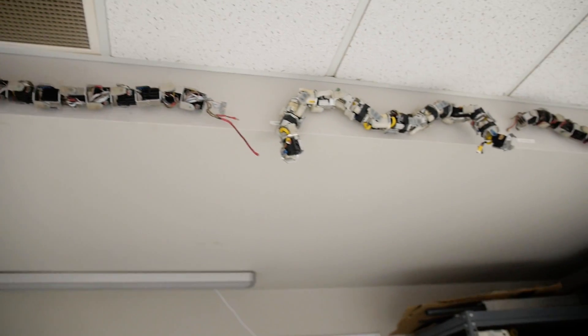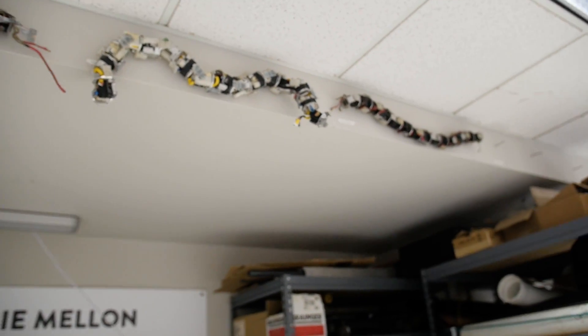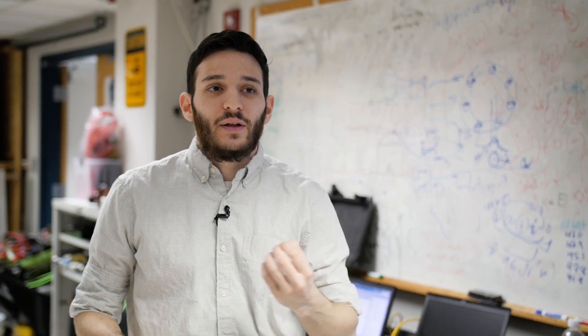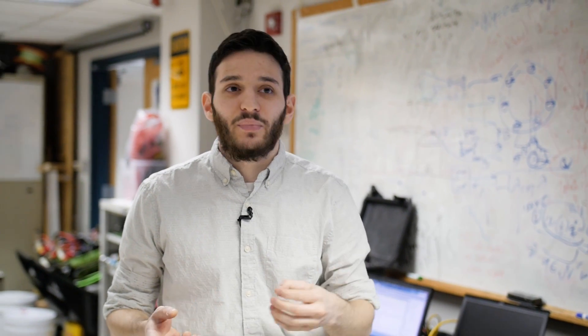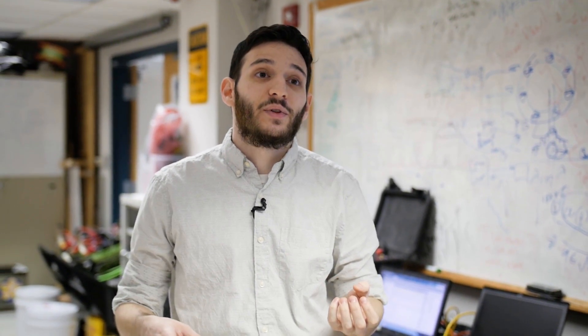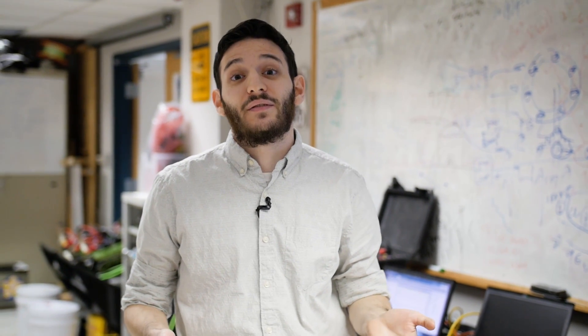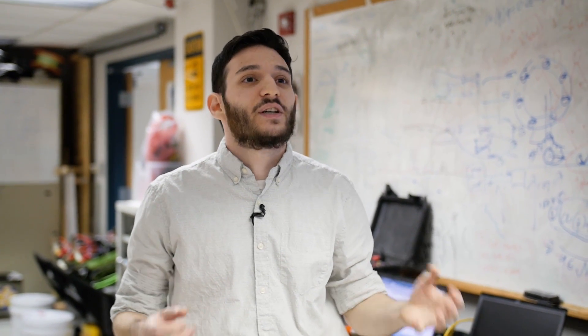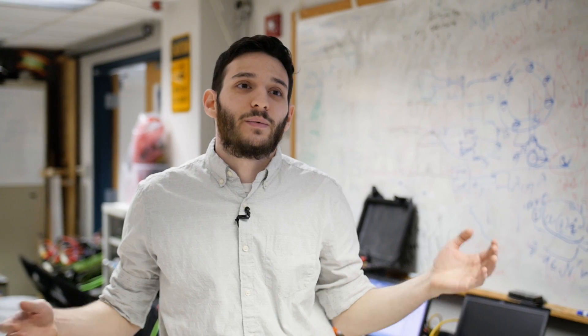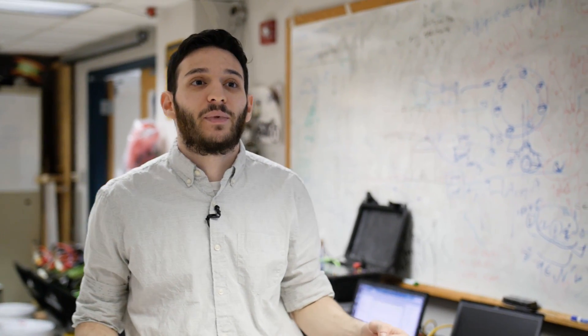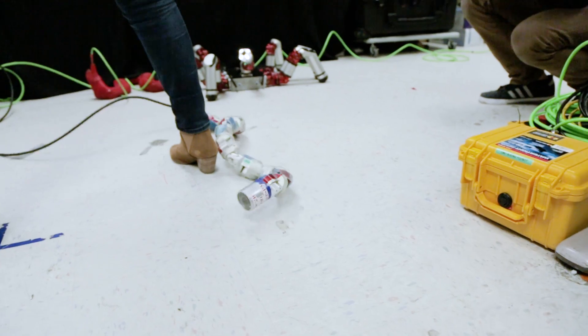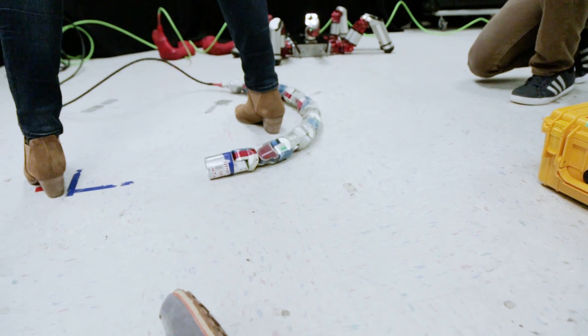So our snake robots are modular in that they're a long chain of the same repeating actuator down the line. And so what that allows us to do is if one breaks you can very quickly replace it with a different one and if you want to change the length of the snake you can go from 16 modules to 20 to 30 depending on how long of a snake you need for your application. On one end it has the camera, on the other end we have a tether that carries power and communications.